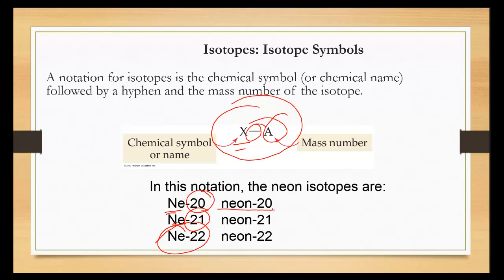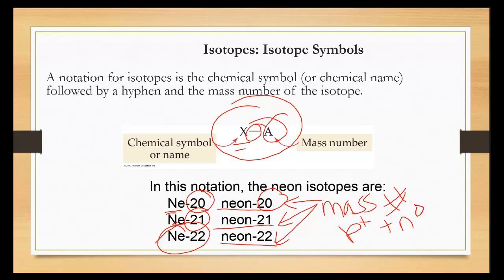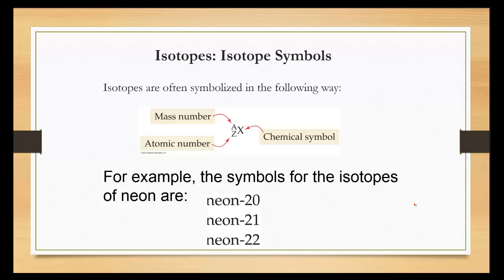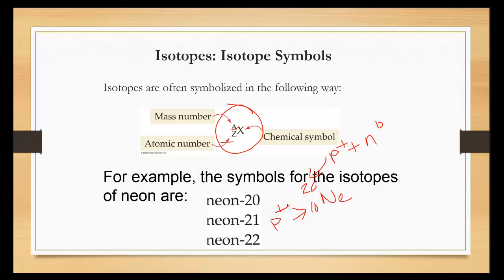Remember, in this notation the mass number is the protons and neutrons added together — not the atomic number alone. Isotopes can also be symbolized with the mass number on top, the atomic number on the bottom, and the chemical symbol. So for neon: mass number 20 on top, atomic number 10 on the bottom; then mass number 21; then mass number 22 with atomic number still 10. Notice the top number is changing while the bottom number remains the same.